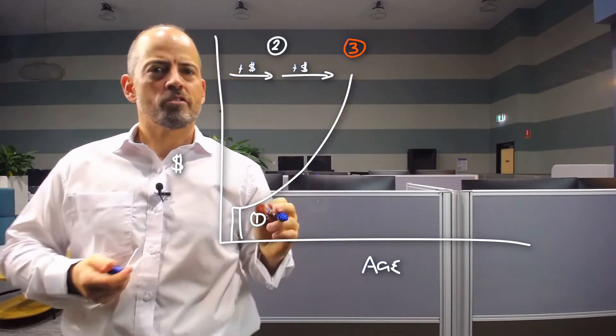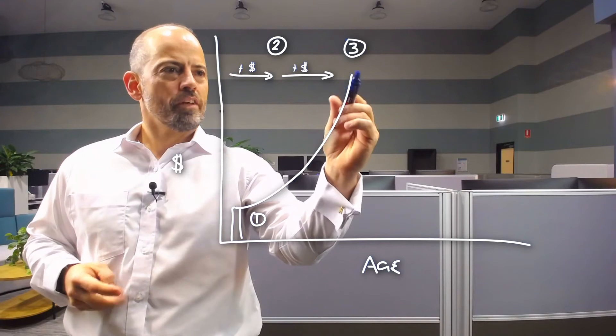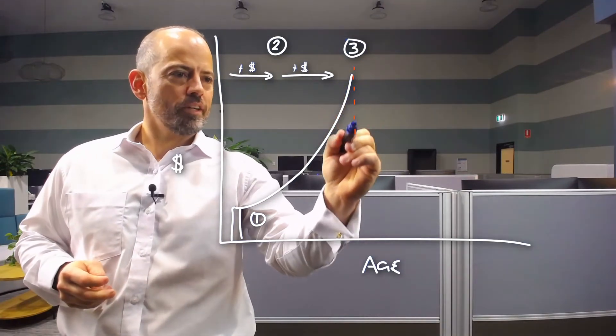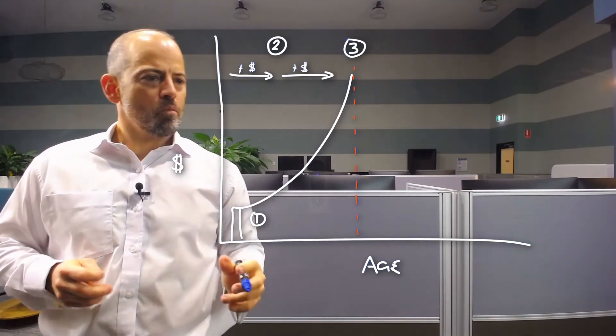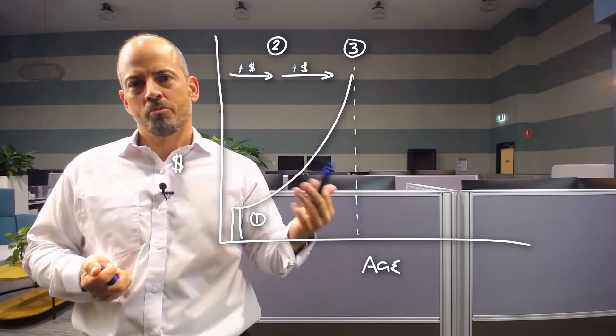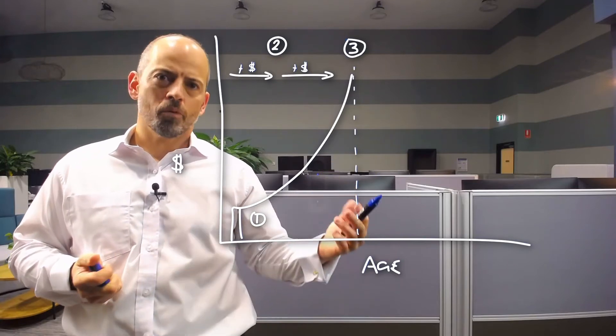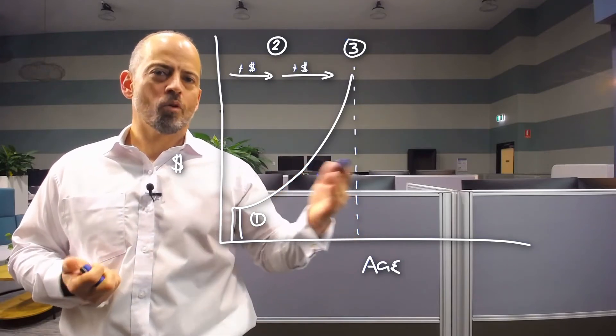That leads us to a third variable, which is one of the most important variables, and that's understanding your goals. One of the goals that is in everyone's plan is: at what point in time in life do I want to have the choice or option whether I continue to work at a reduced rate or stop work?